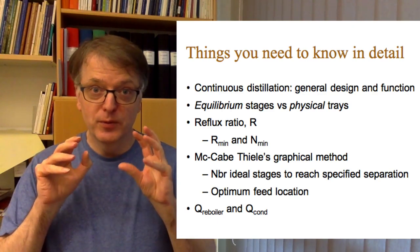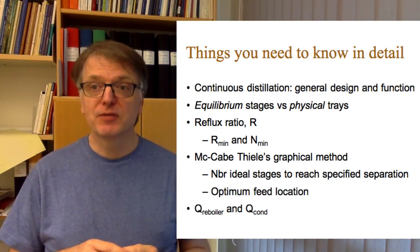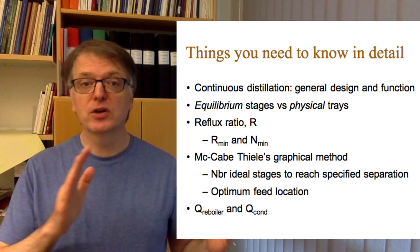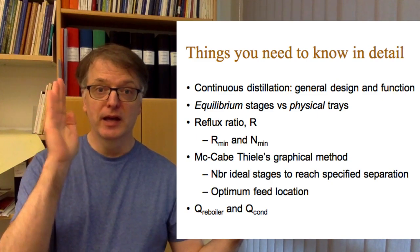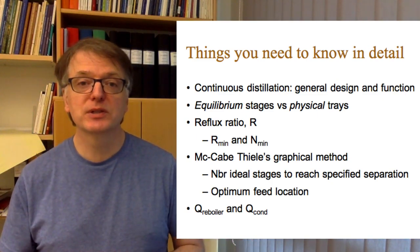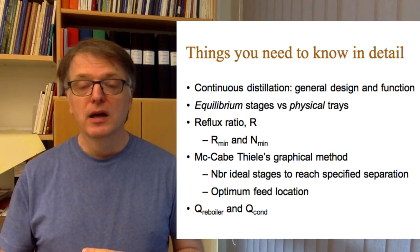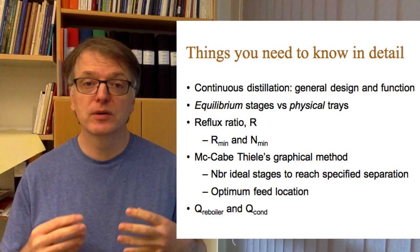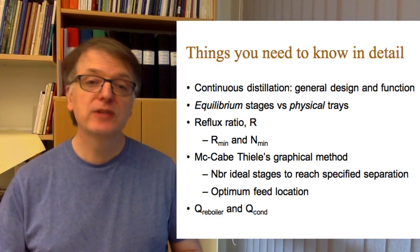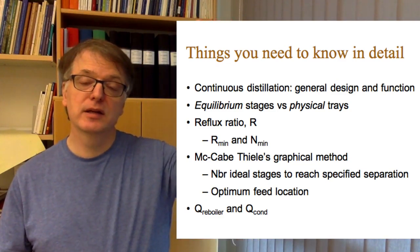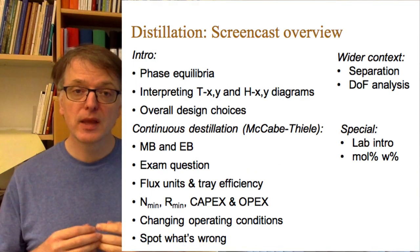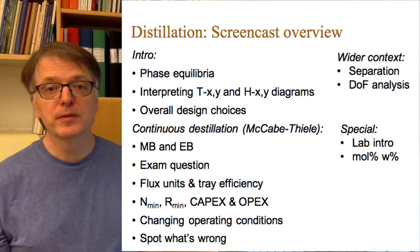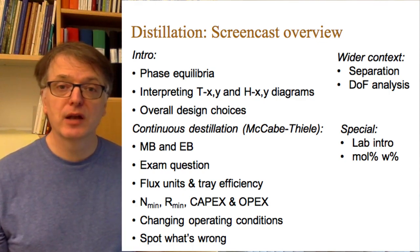You need to be able to understand McCabe-Thiele's graphical method and use that to calculate the number of ideal stages to reach a certain separation, a certain XD and XW if you know the composition of the feed. You need to be able to calculate the optimum feed location, and you need to be able to calculate the energy needed in the reboiler and in the condenser. To your help, there is this list of different screencasts that you can look at.